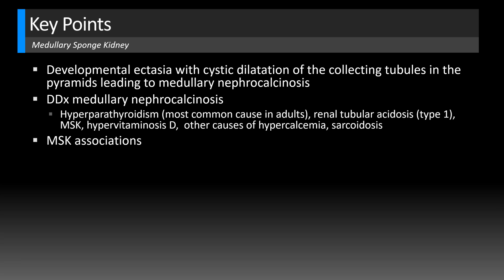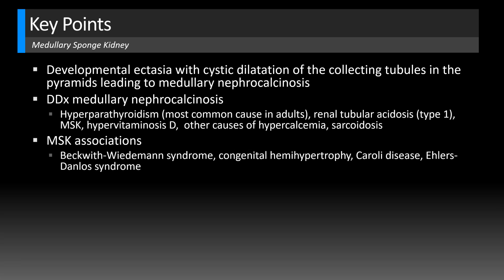Medullary sponge kidney often occurs sporadically, but it can be associated with other syndromes — Beckwith-Wiedemann syndrome, congenital hemihypertrophy, Caroli disease, or Ehlers-Danlos syndrome, among others. These are all quite rare. In this case, you may have noticed the kidneys were rather large, and that's because of the association with Beckwith-Wiedemann syndrome, which is an overgrowth syndrome.